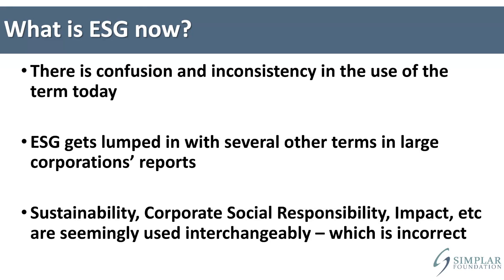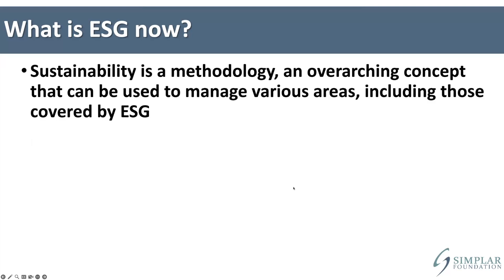The terms get used interchangeably, and in particular, sustainability gets lumped in with these other things, which is not correct. Sustainability is actually an overriding methodology used to manage other areas like environmental, social, and corporate social responsibility — it's not a synonym. Like ethics is a concept we use to manage everything, sustainability is a concept we apply in various areas, including the environment and personnel policies.